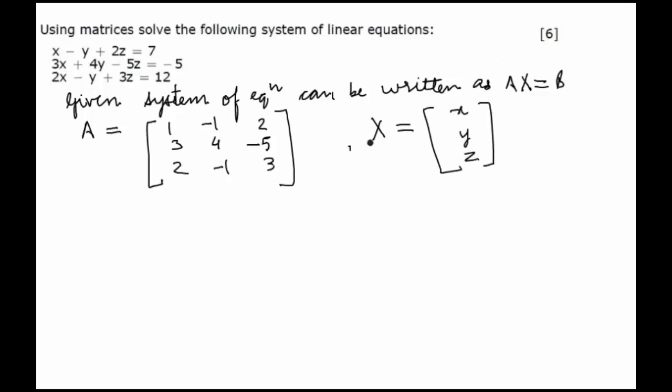And B would be the matrix of the constants, so B is equal to 7, minus 5, 12. We have to solve this to get the answer for matrix X.